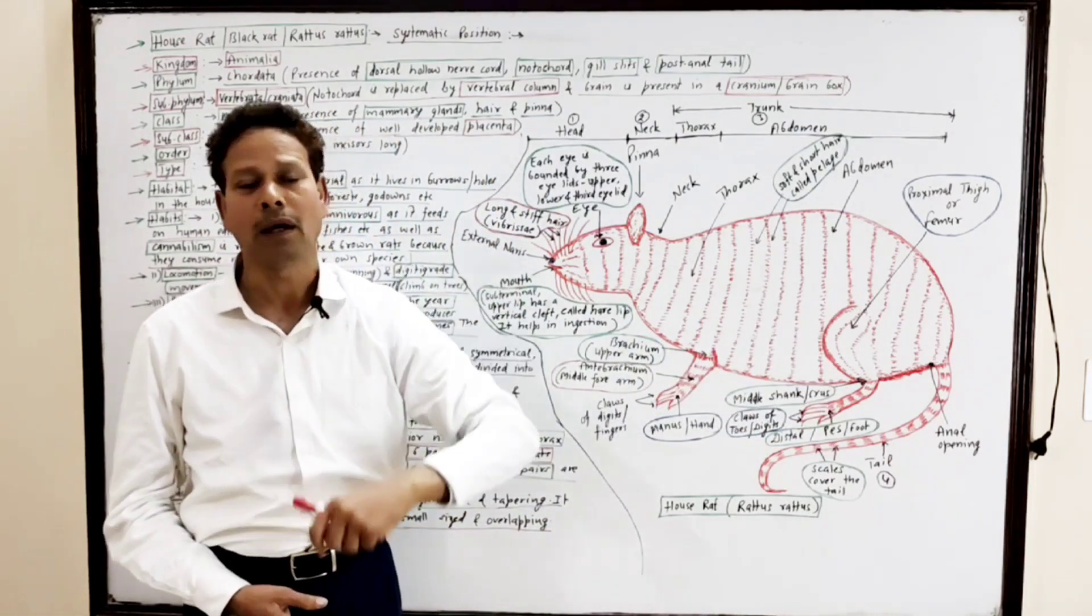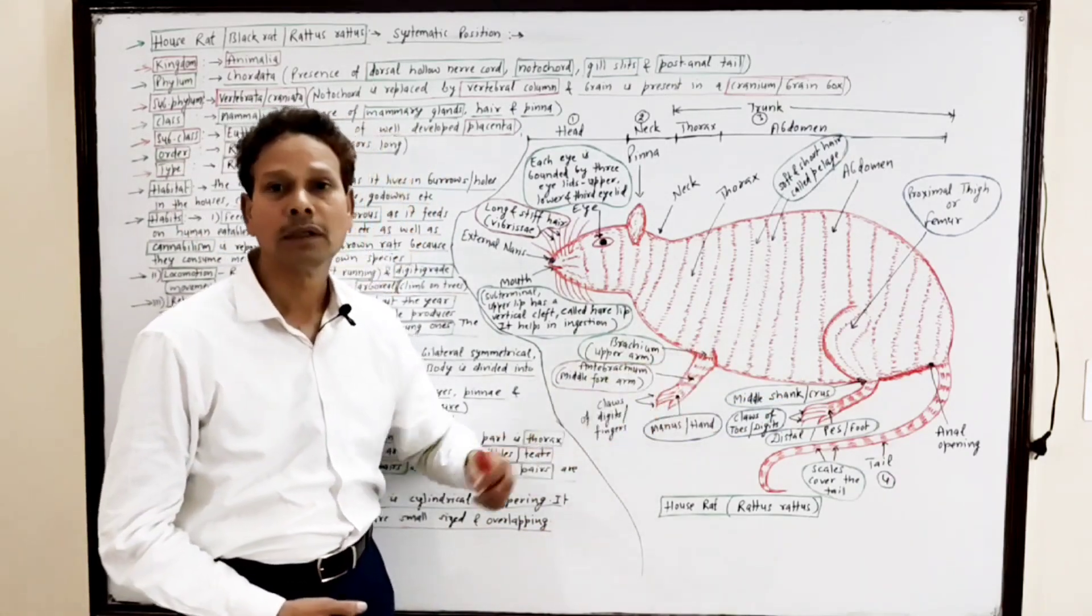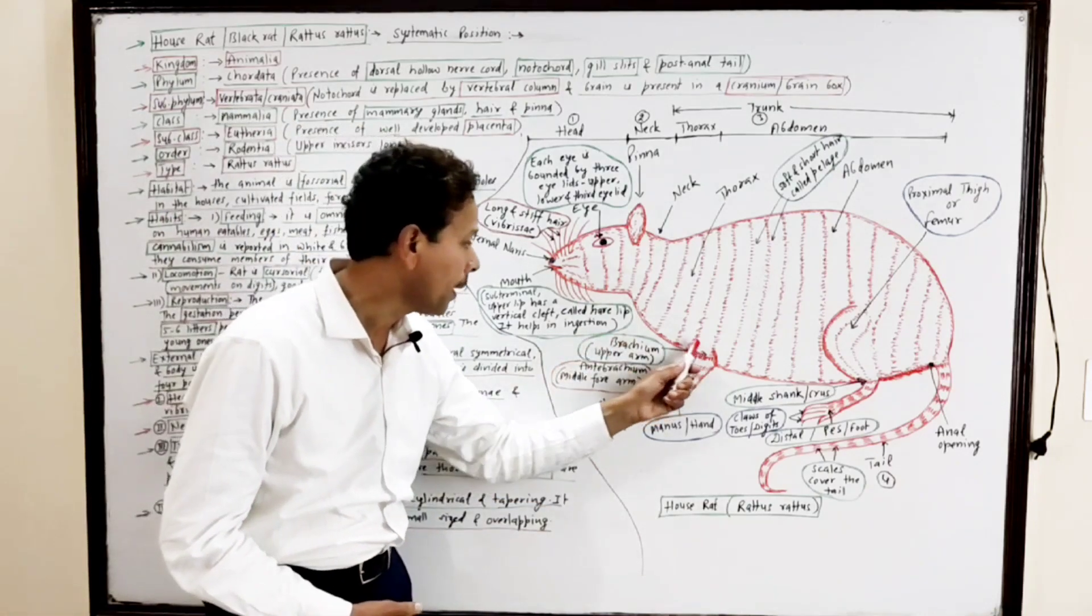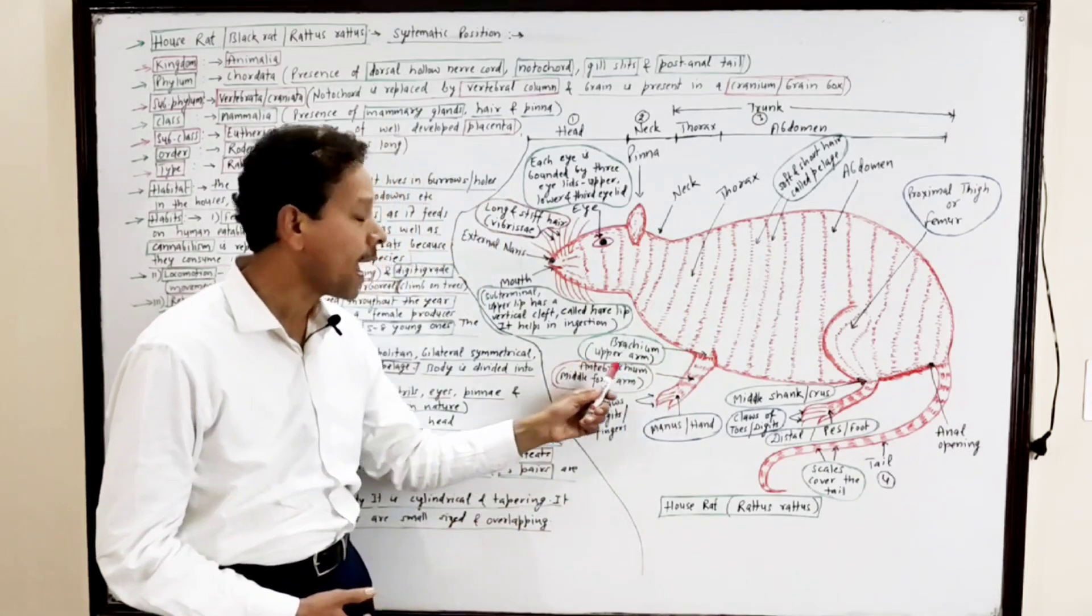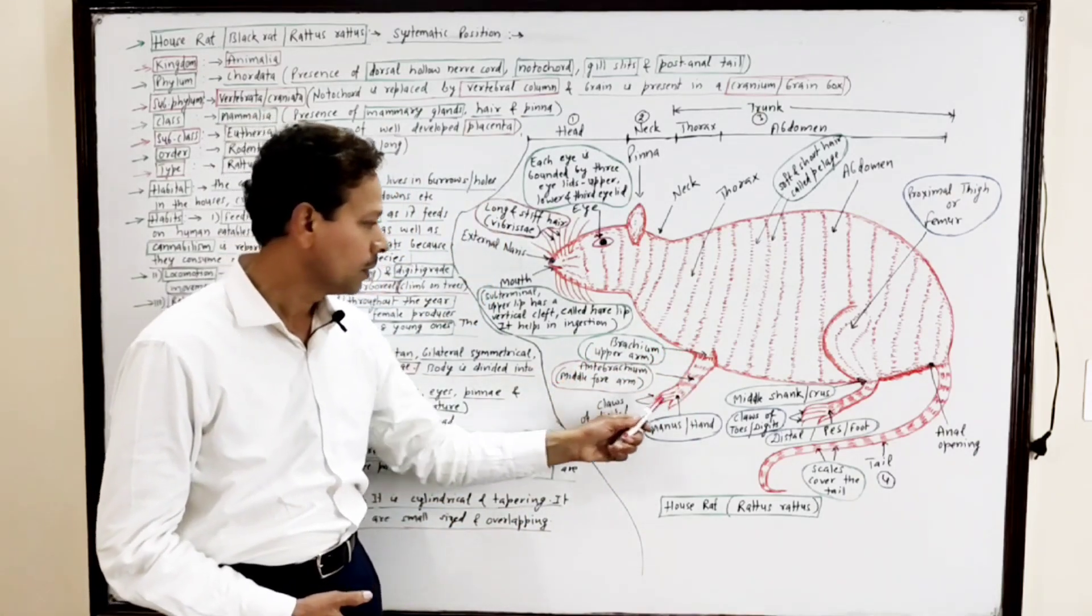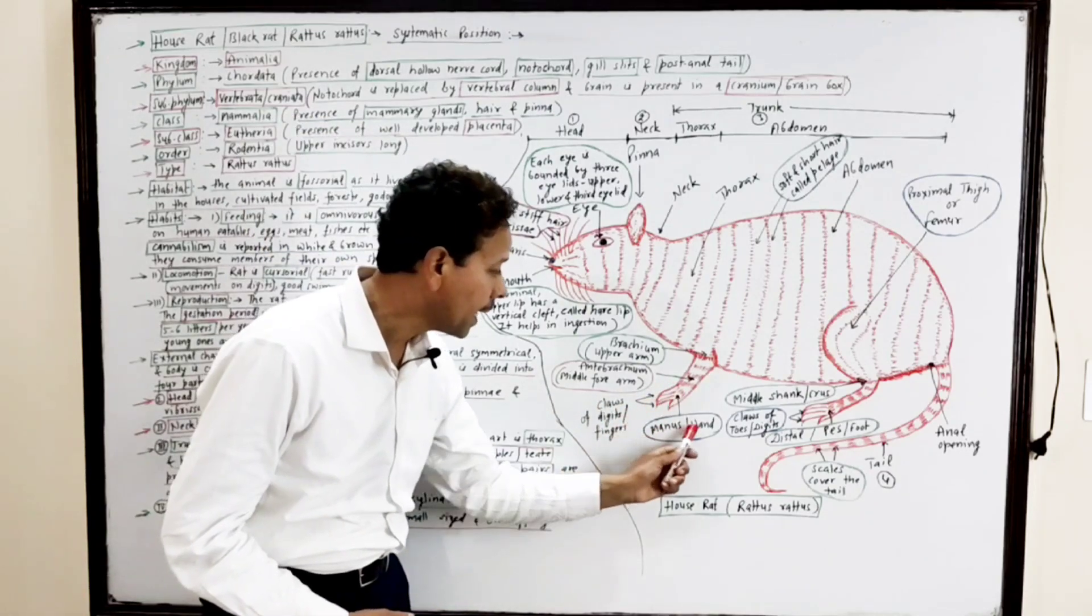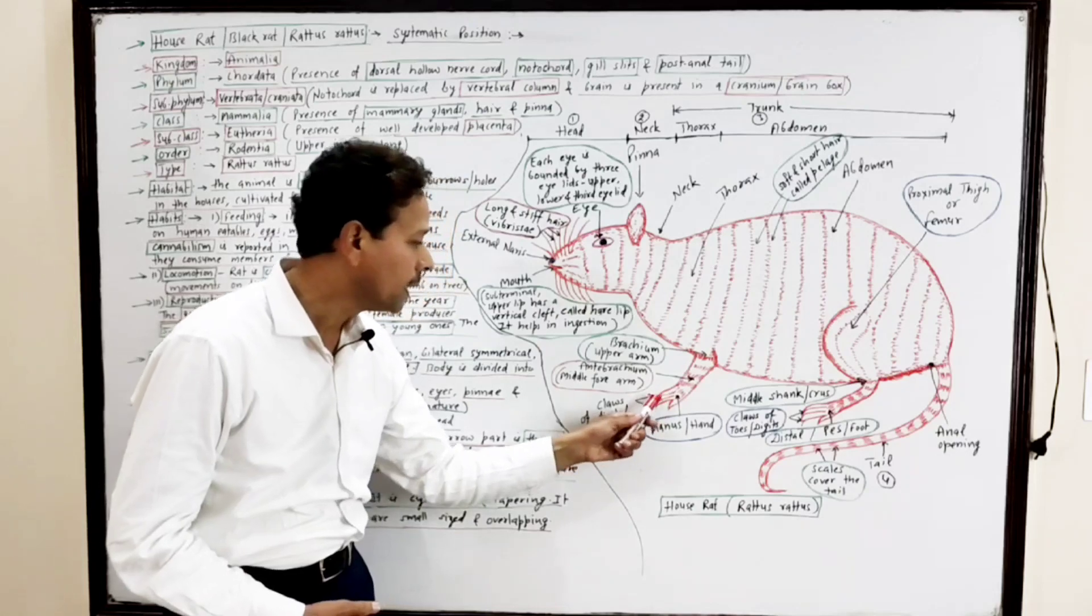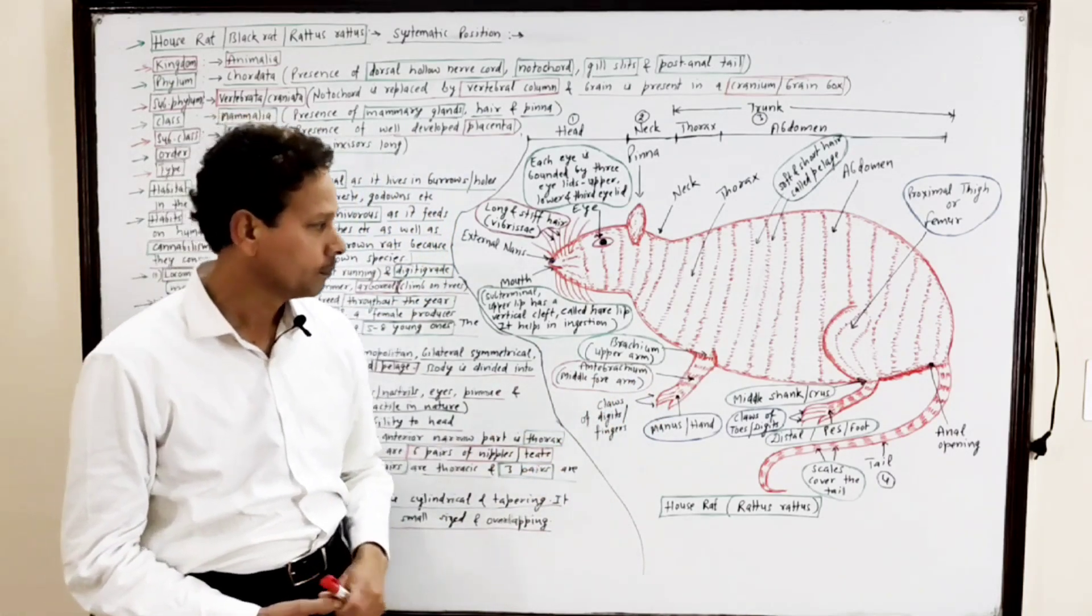Each forelimb has three parts: the upper part is brachium, the middle part is antebrachium, and the lowermost part is manus, which possesses digits or fingers with claws.